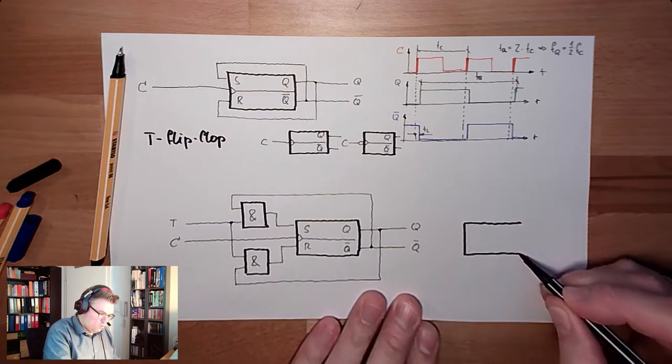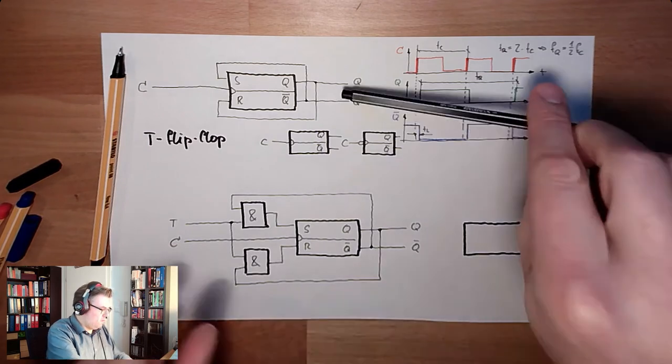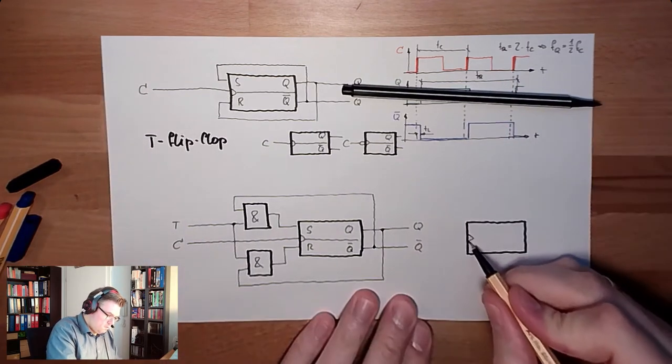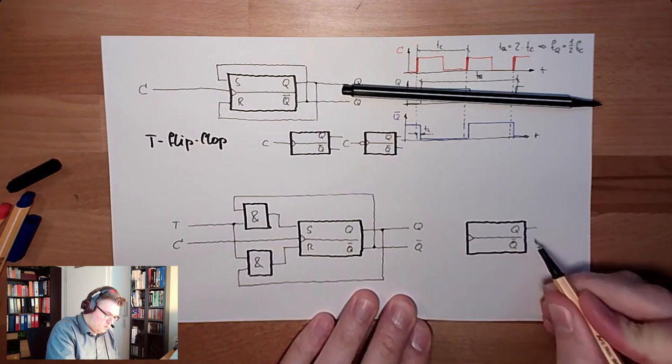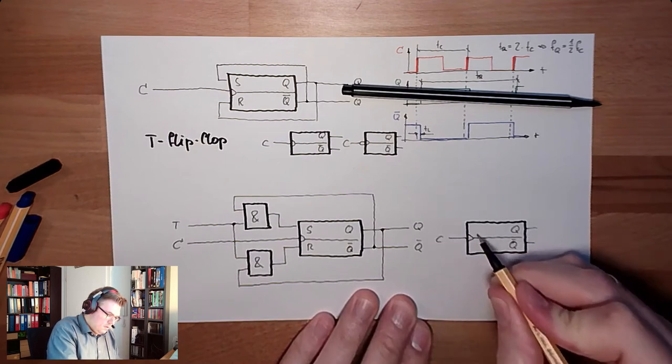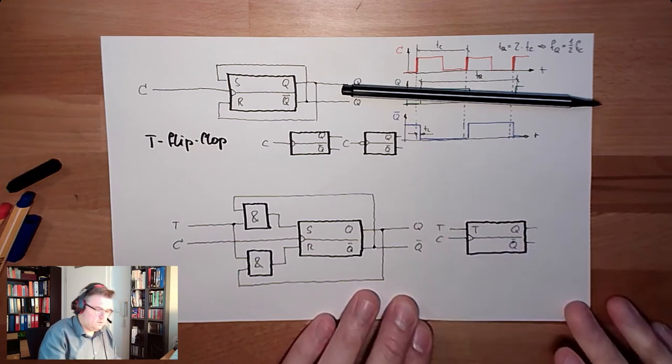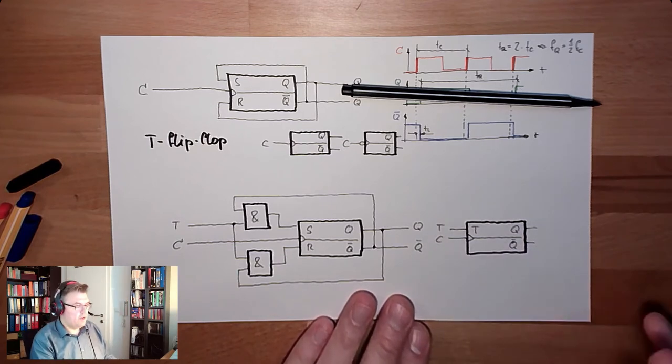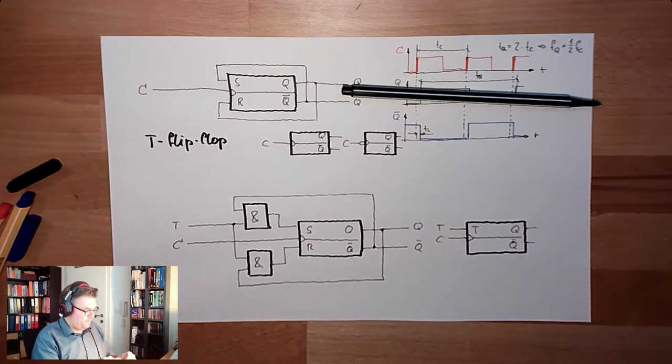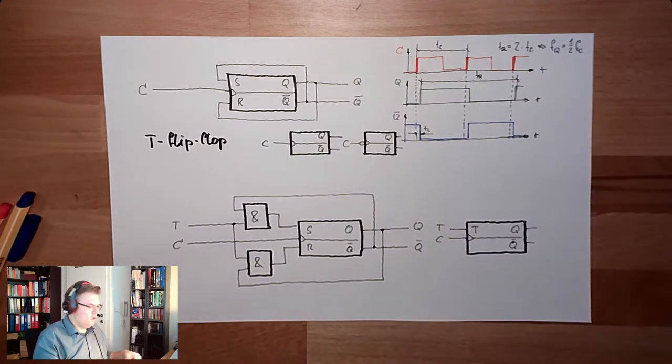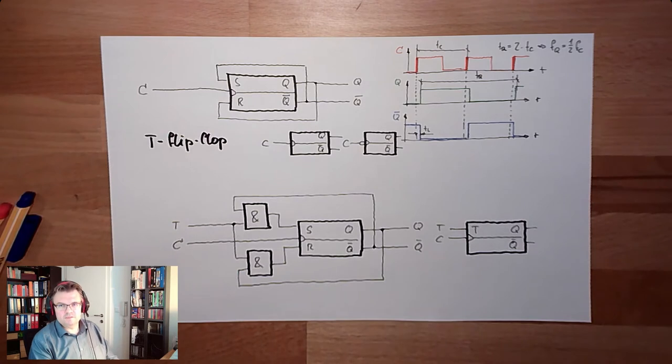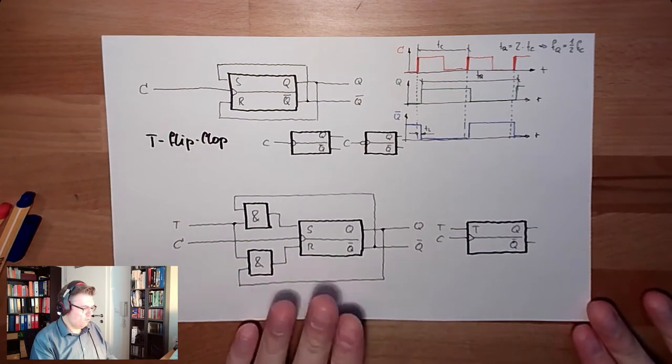Symbol. Also close to the above one. Q, not Q. Here is C. And here we have the toggle input. Toggle enable input. T flip-flop. T flip-flop. First flip-flop, let's say. Toggle flip-flop.